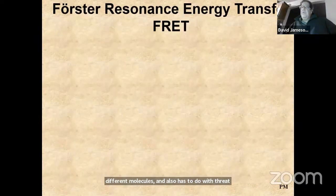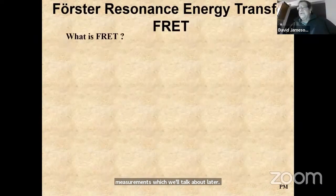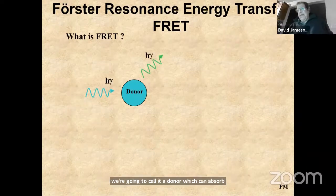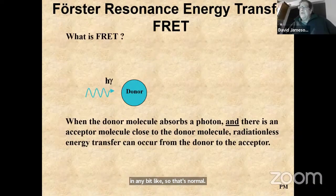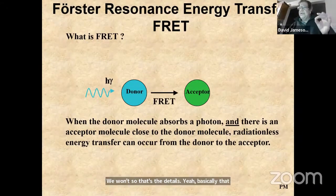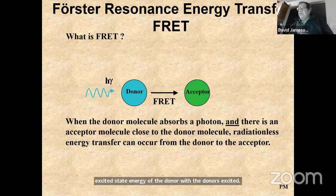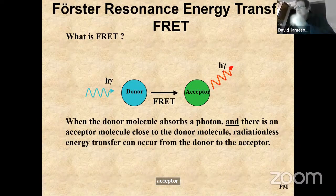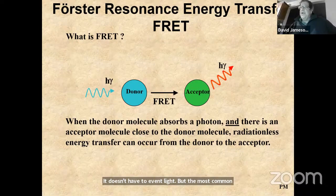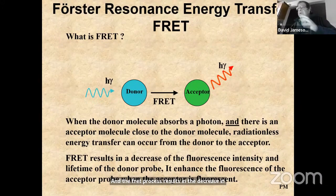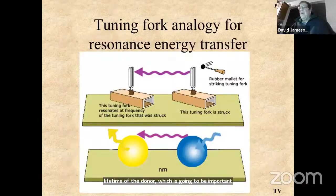You can put polarizers in a microscope to get anisotropy or polarization images as well as intensity, giving information on rotational mobilities. This also relates to FRET measurements. FRET stands for Förster Resonance Energy Transfer. Consider a donor molecule that can absorb and emit light. If an acceptor molecule is within proper distance and orientation, the excited state energy of the donor can transfer to the acceptor, which can then emit light of a different wavelength. This is a way to detect when molecules are in proximity to each other.